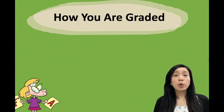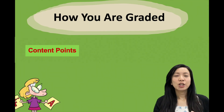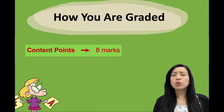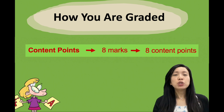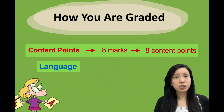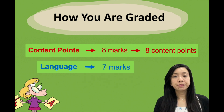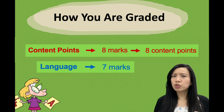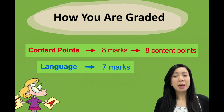So let's take a look at how you are graded for summary first. You're graded for your content points, and this consists of 8 marks — meaning you need at least 8 content points in your paragraph. The second thing you are graded for is language, and this consists of 7 marks. For today's lesson, I'm going to focus more on content points, because I want to talk about what you should not be including in your summary paragraph.